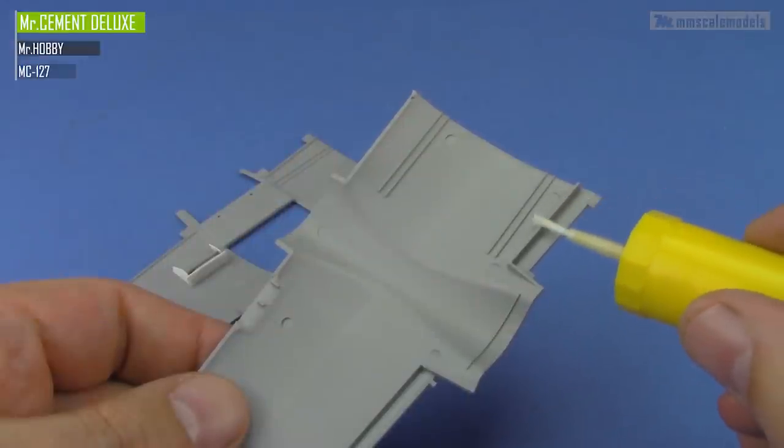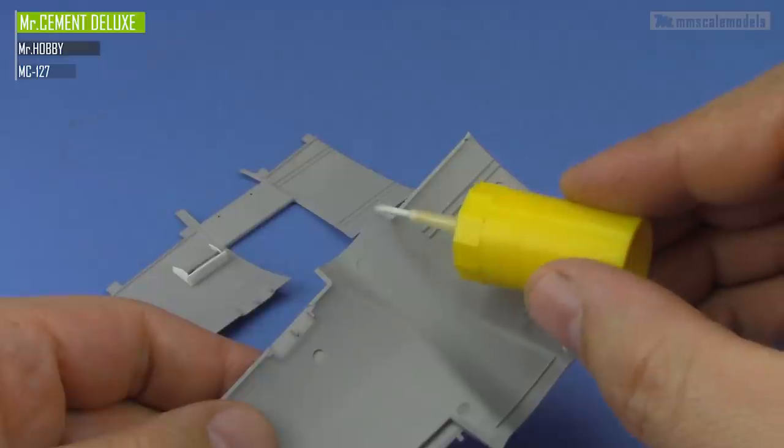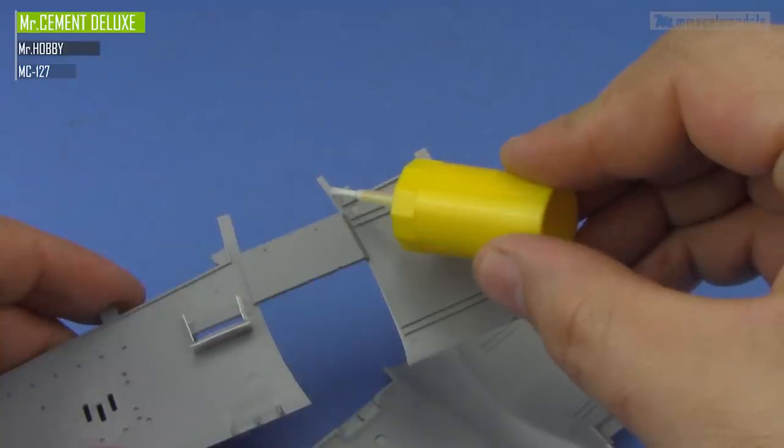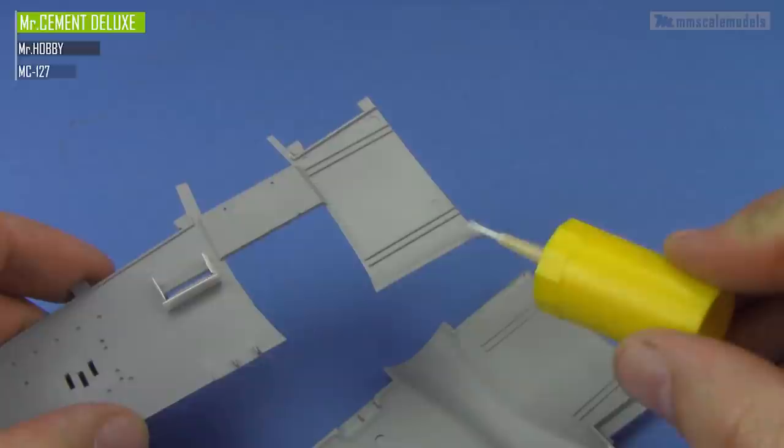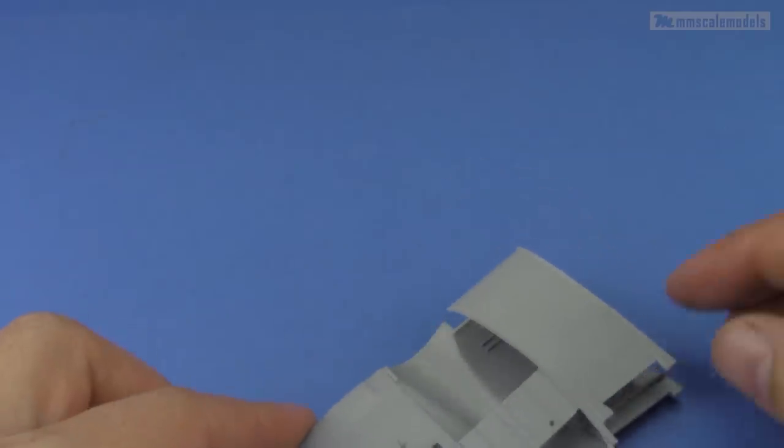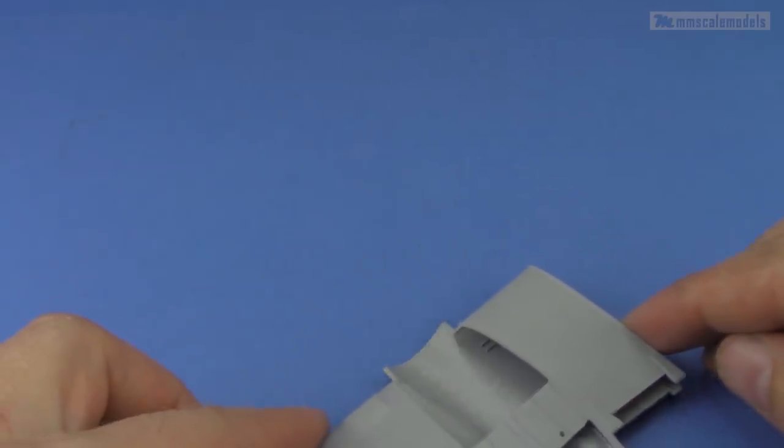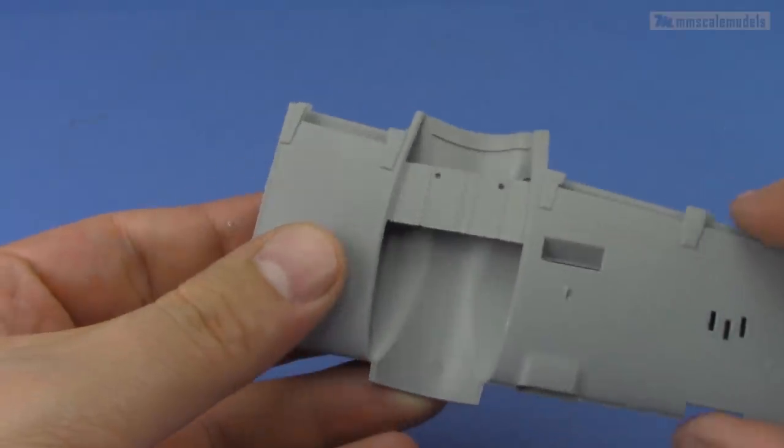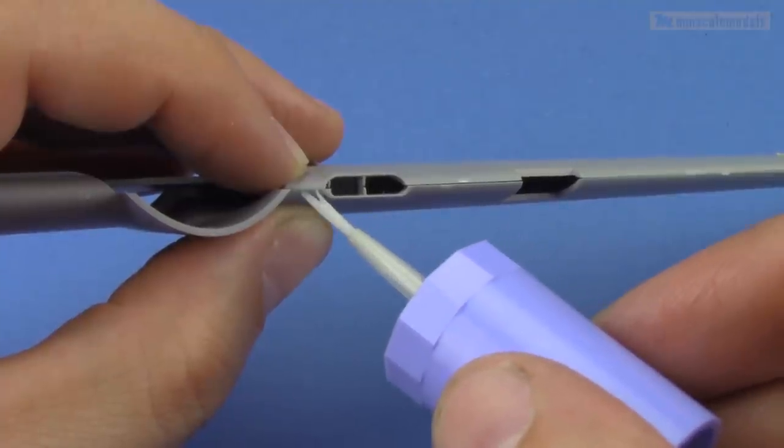Talking about the wings assembly, here things start to look much better as the actual fit is rather good. Working on small sections at a time, starting from the wing root area, I made my way around the entire wing without a single issue. All panel lines are nicely aligned and there is no significant step on the seam.